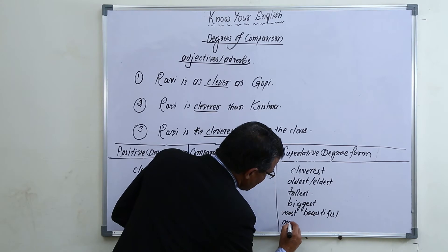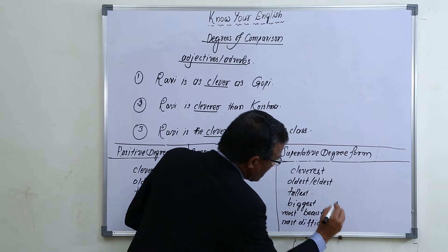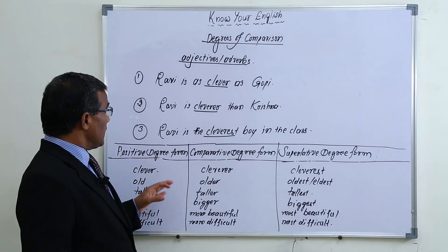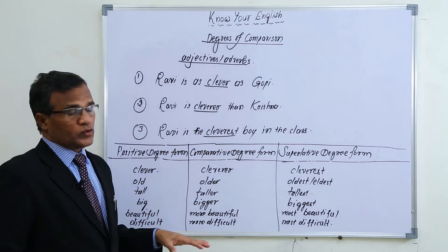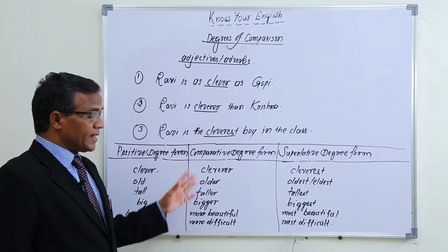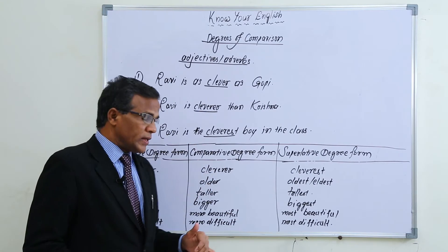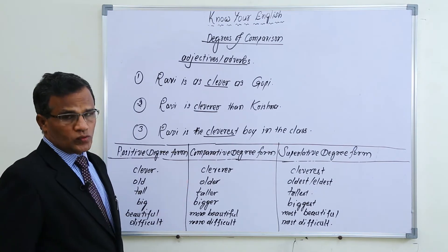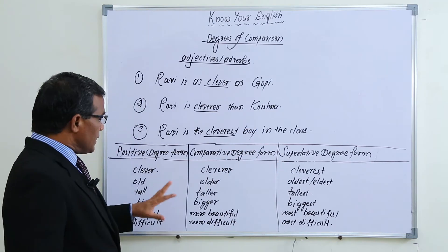For example, 'difficult' is also a long adjective: 'difficult — more difficult — most difficult.' By this we understand that we also need to know the three forms of adjectives and some adverbs. If we don't know the three forms, we can't frame comparison sentences. That's why we have to learn positive degree form, comparative degree form, and superlative degree form.